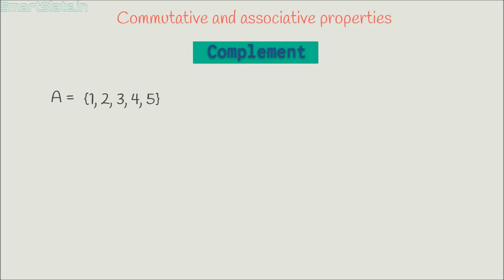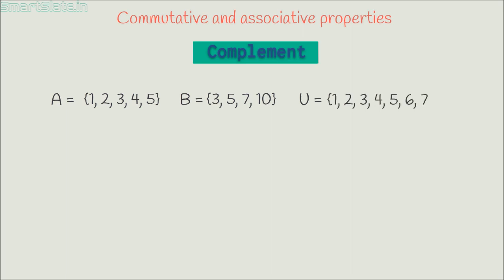Let's consider two sets. Set A with elements 1, 2, 3, 4 and 5, and set B with elements 3, 5, 7 and 10. And the universal set U has elements 1, 2, 3, 4, 5, 6, 7, 8, 9 and 10.